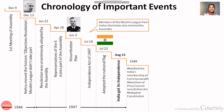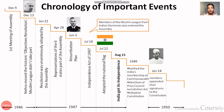Rather than a republic democracy under a monarchy, India adopted the Constitution on 26th November 1949. Then on 24th January, there was the signing of the Constitution by the Constituent Assembly members, so that the constitution could be formally accepted.